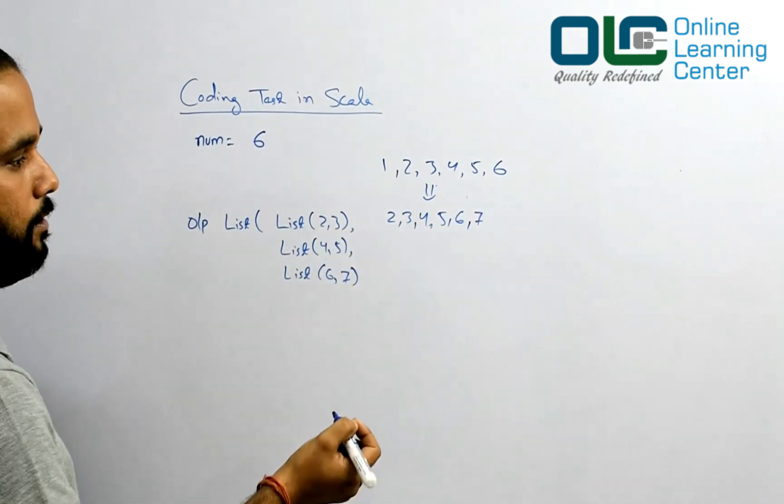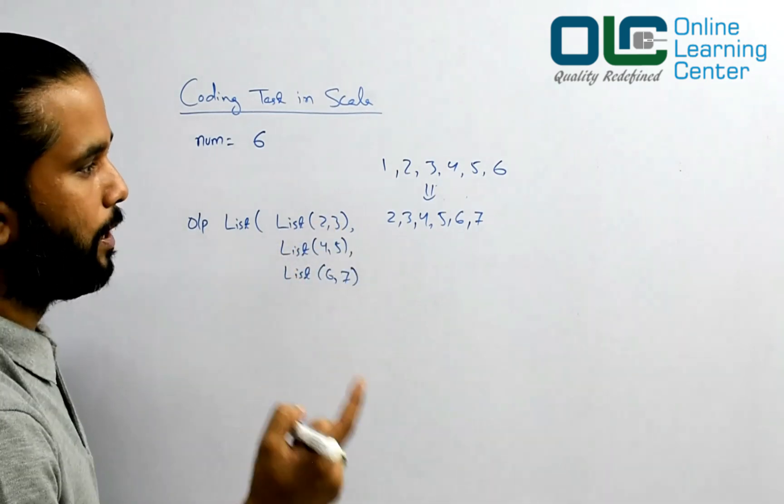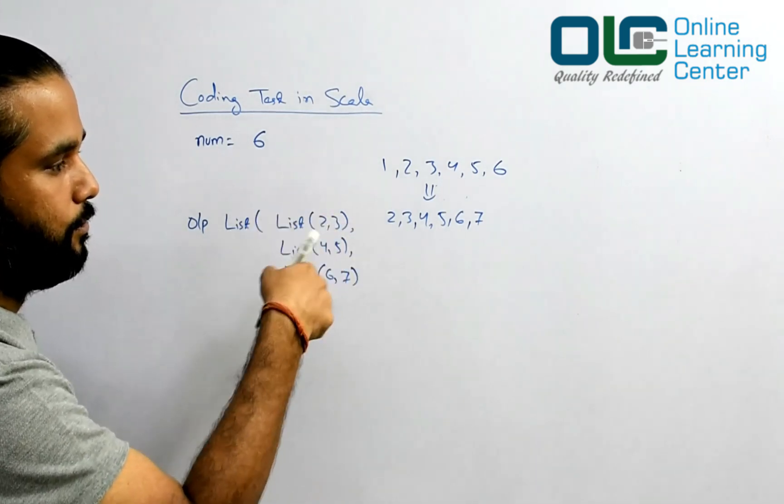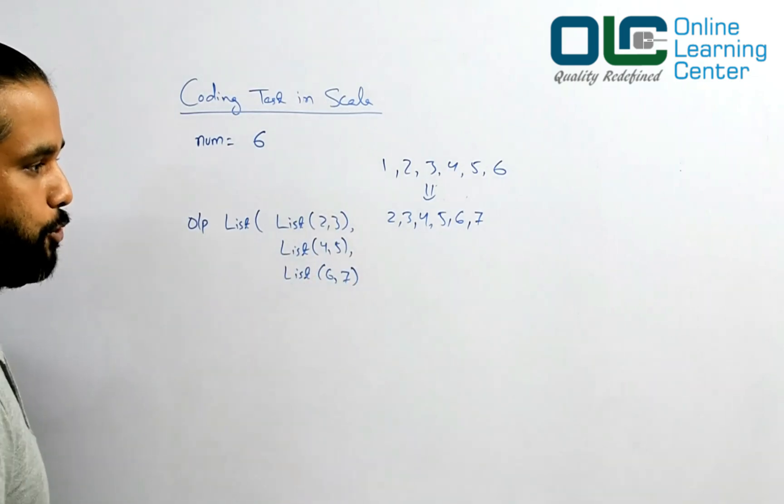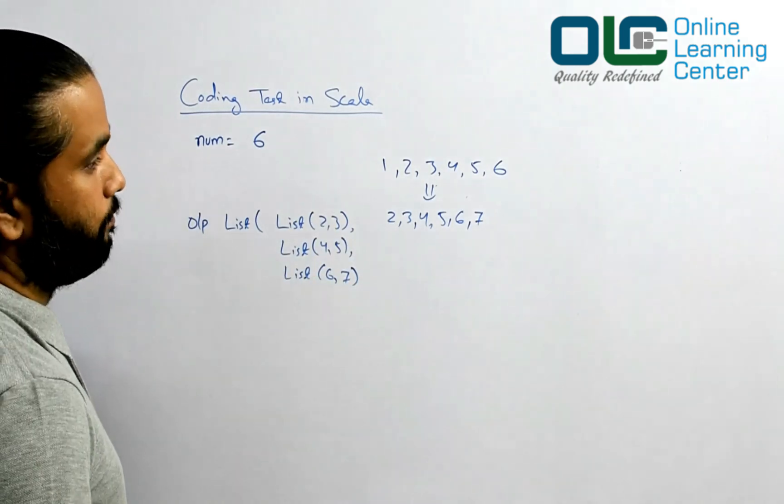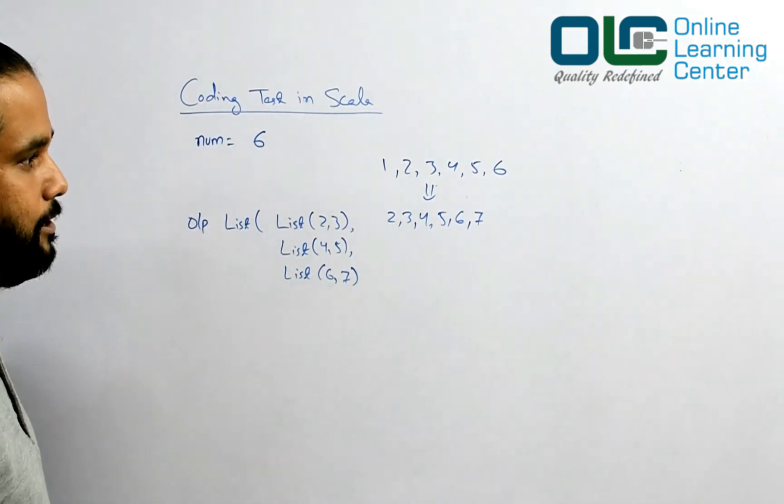And once you're done, you will have to wrap it like this. Now you have to think how do you get this output. If you want a hint, you may use something like sliding technique to get this output.